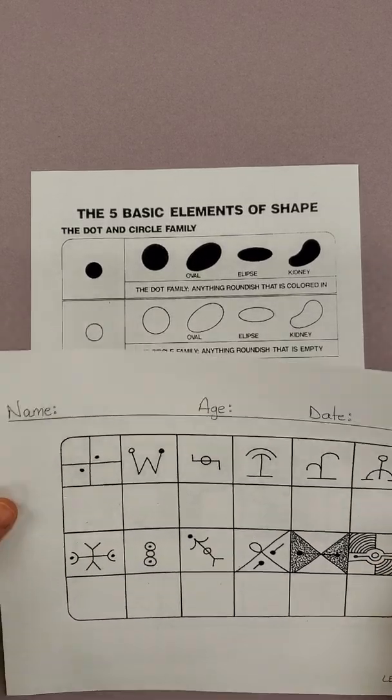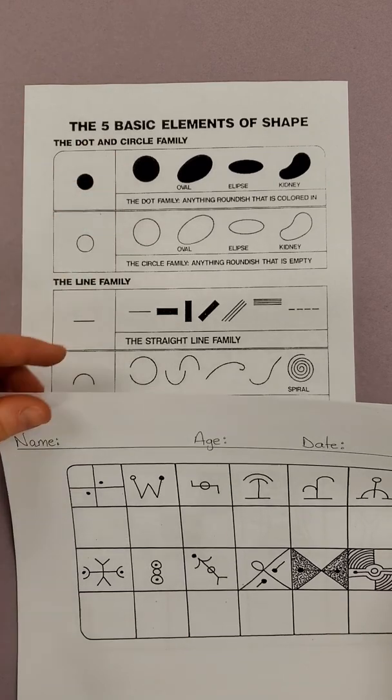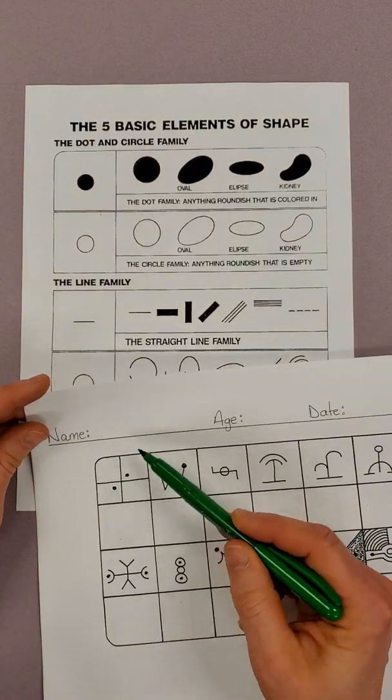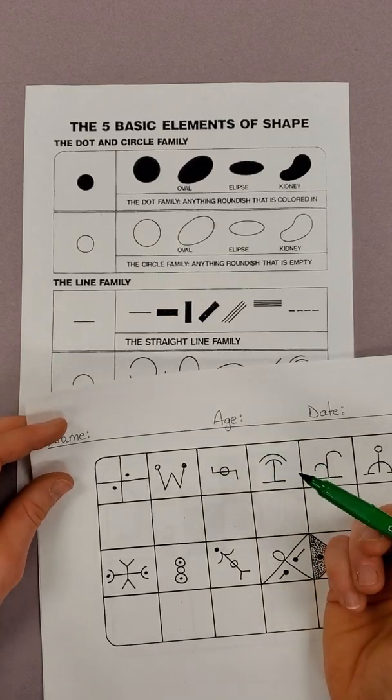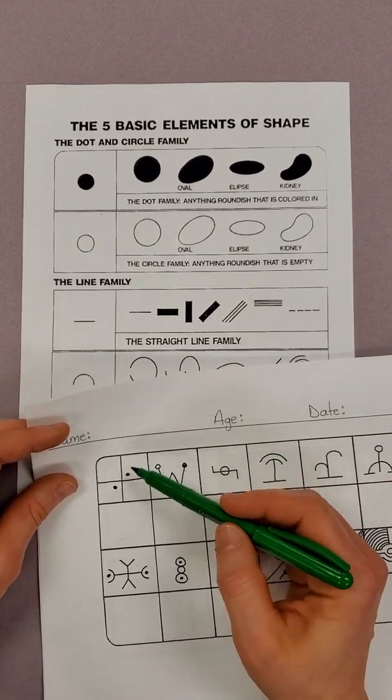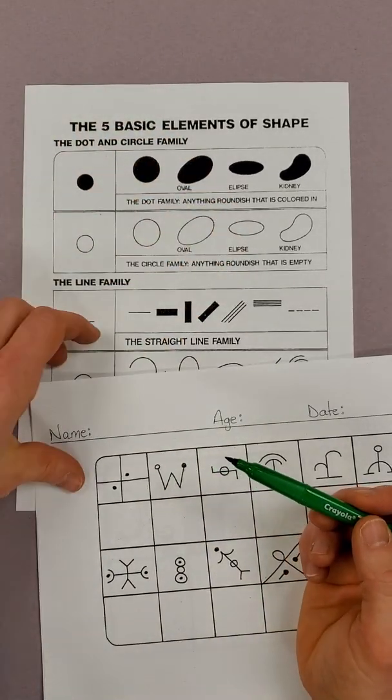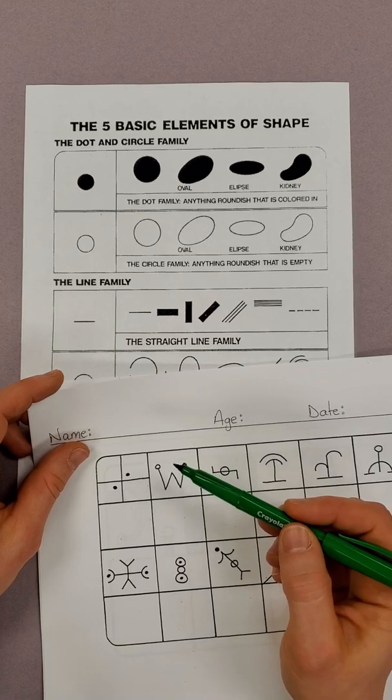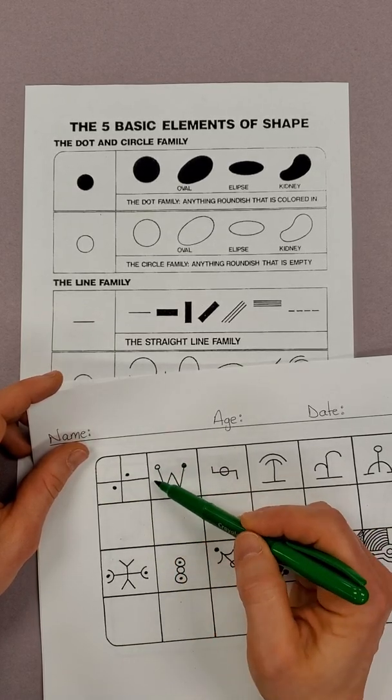So we're going to practice seeing lines and shapes and drawing them. So this is not super complex, but for a kindergartner, you're going to have to maybe break it down. Ask them what do they see using the five elements of shape. I see two dots and I see a straight line and another straight line.